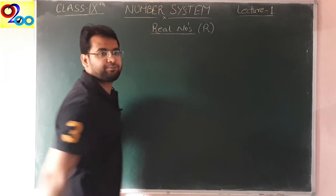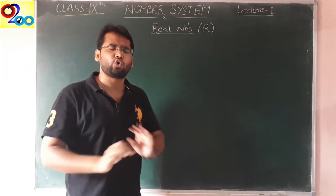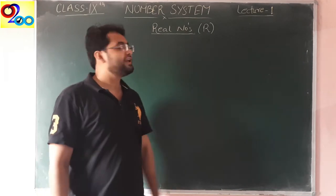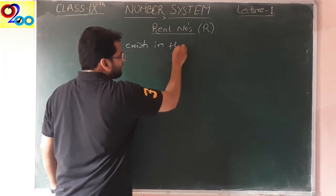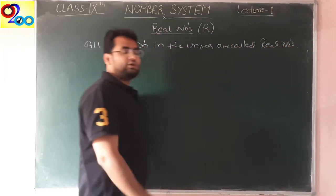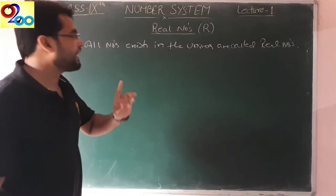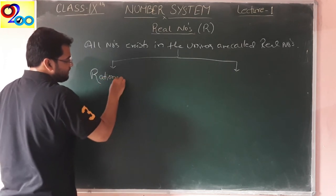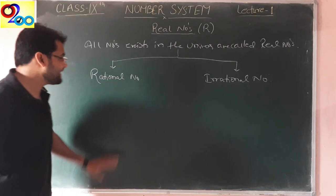We can say all numbers that exist in the universe are called real numbers. Real numbers are categorized into two parts: the first part is rational numbers and the second part is irrational numbers.